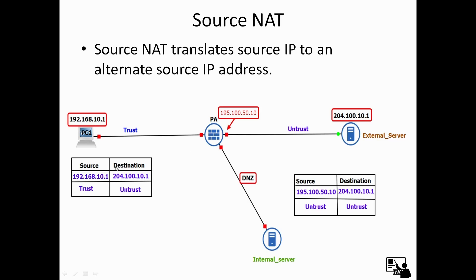When this packet comes to the Palo Alto firewall, it will apply source NATing and change the source IP address to the egress interface's public IP address. So after NATing the packet will look like this: source IP address is 195.100.50.10, destination is 204.100.10.1, and both the source zone and destination zone will be untrust.